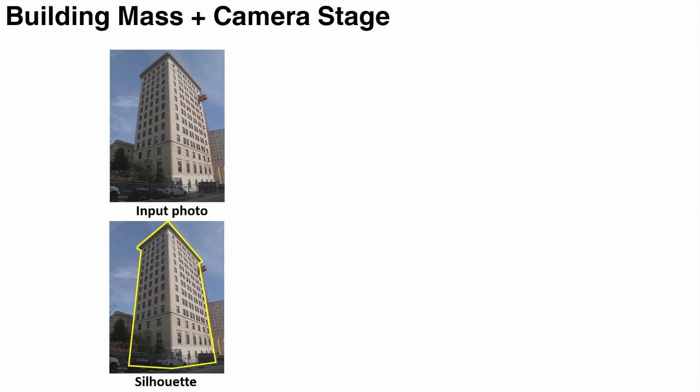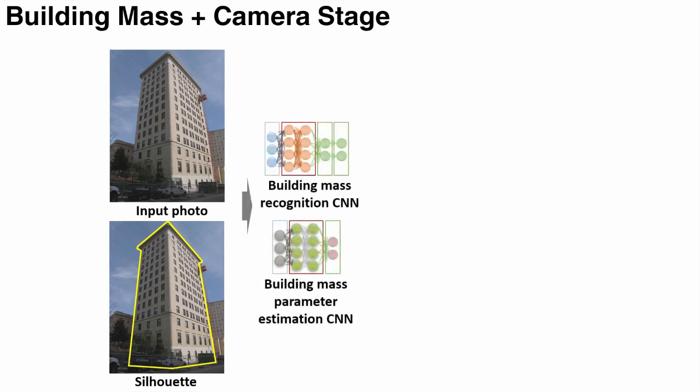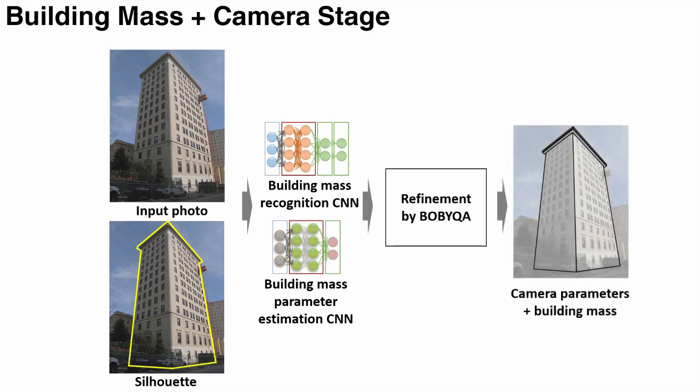The first stage requires a single photo and the silhouette of the target building as input. The silhouette serves to simplify the subproblem at this stage. The Recognition CNN recognizes the shape of the building mass, and the Parameter Estimation CNN estimates the camera parameters as well as the details of the shape, such as width, depth, height, and roof size. The estimated parameters are further refined by an optimization. The output of this stage are the camera parameters and the building mass grammar.